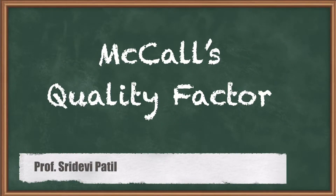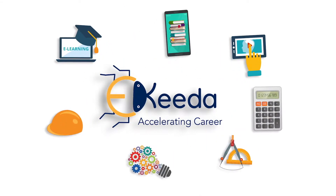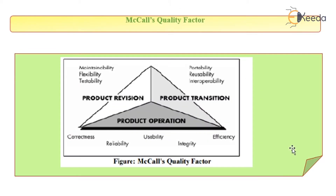Today we will be studying about McCall's Quality Factors. Whenever software development is considered, its quality is a highly important element which has to be studied. A product cannot be delivered with inferior quality. Communication, planning, coding, and testing are the various phases of software development itself. It is essential to ensure the quality of the software starting from the first phase of its development.